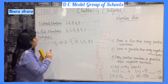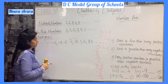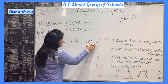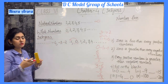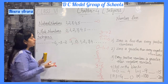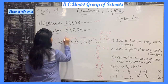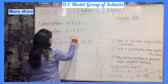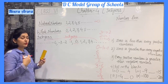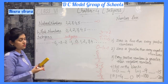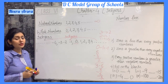When we require negative numbers, all negative numbers and all positive numbers including 0 are known as integers. So a collection of all positive and negative numbers including 0 is known as integers.